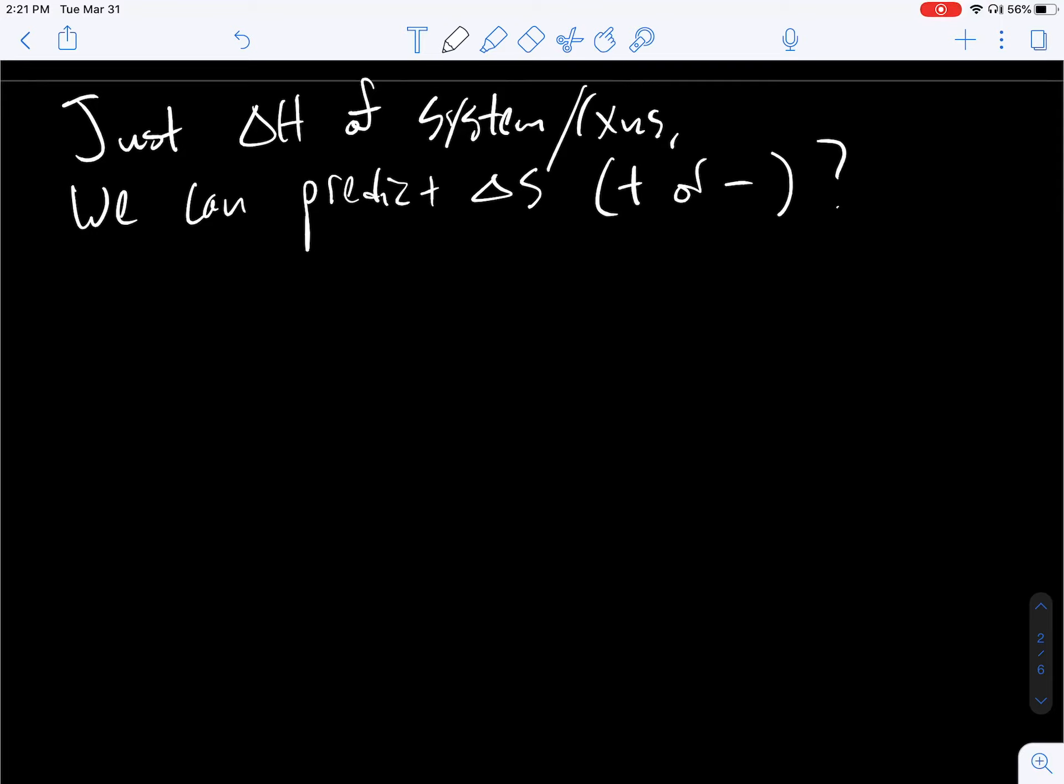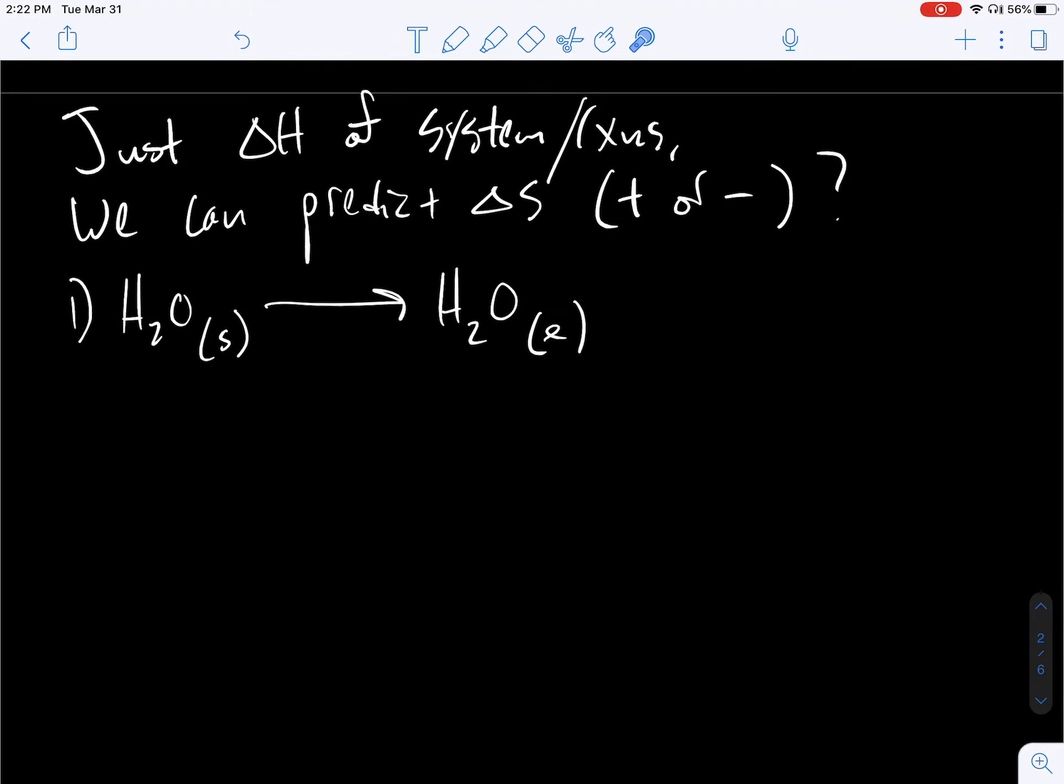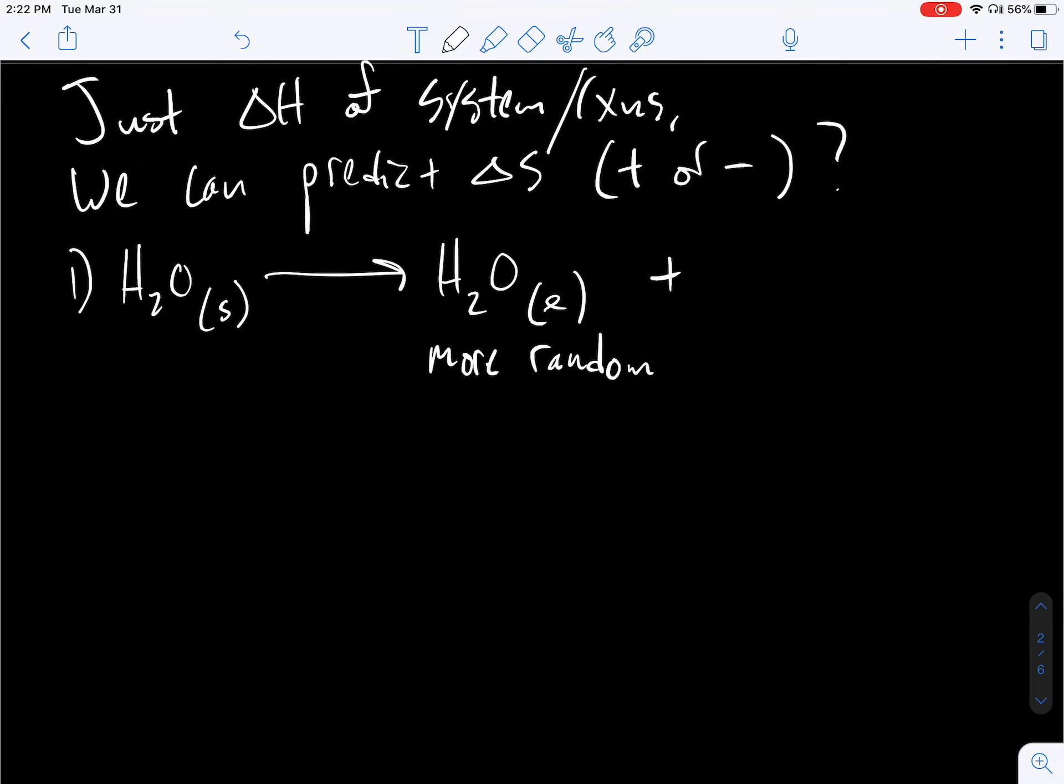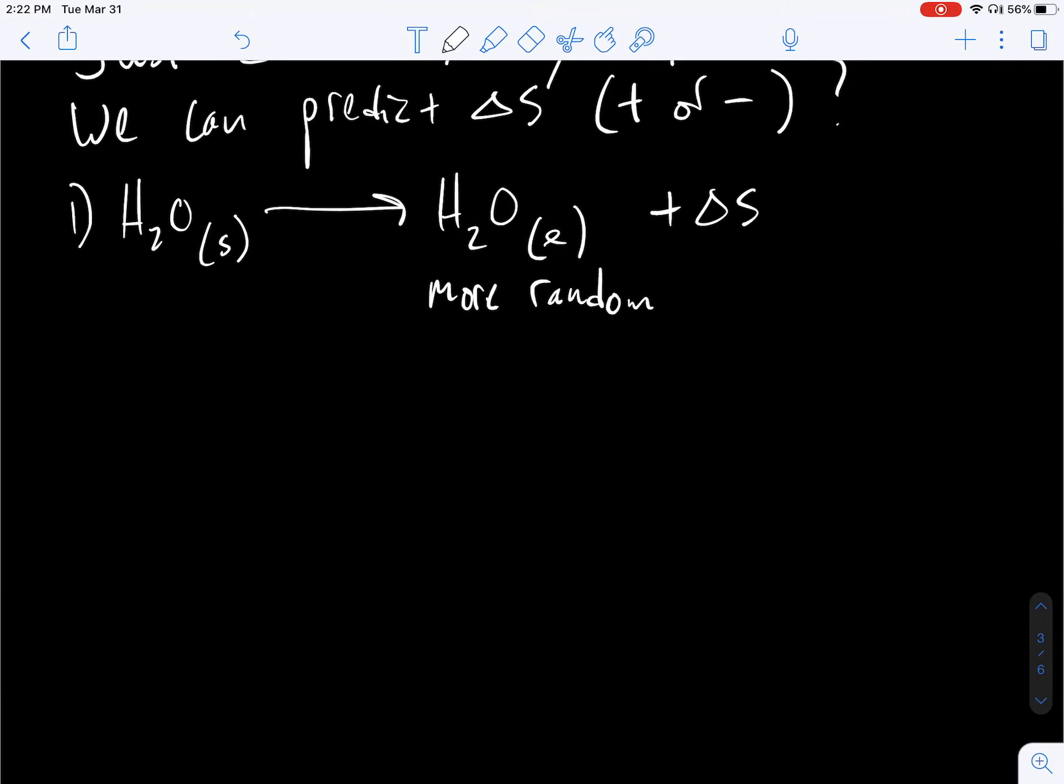Let's look at process number one here. So a phase change from H2O solid to a liquid. We talked about this a little bit before. Is this a positive delta S, as in overall, am I increasing the randomness or am I decreasing the randomness of the system? Again, this is just the system's perspective. We're defining our system as the water. So if I'm going from solid water to liquid water, this is more random. There's more disorder involved in a liquid system than a solid system. So anytime you go from a solid to a liquid, from the system's perspective, you have an increase in your entropy. Going back the other way, you would have a negative delta S value.